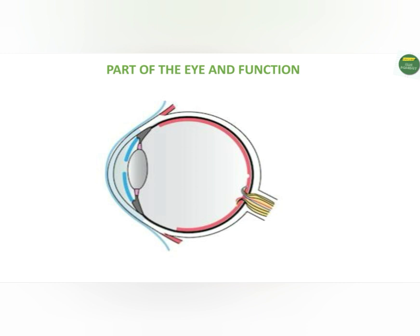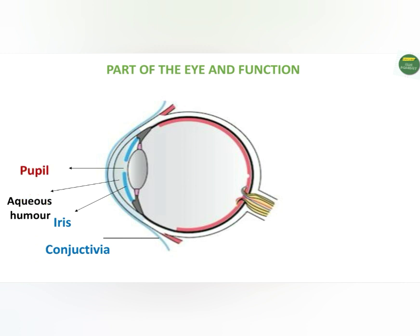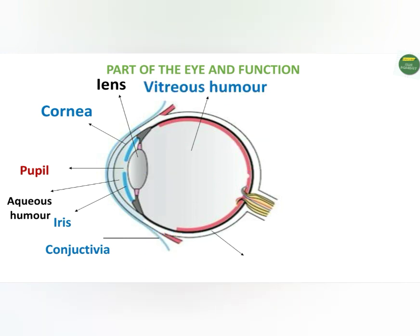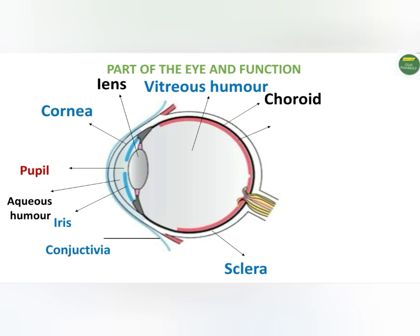Let's start by familiarizing ourselves with the basic parts of the eye. These include the conjunctiva, the iris, the aqueous humor, the pupil, the cornea, the lens, the vitreous humor, the sclera, the choroid, the retina, the fovea, and the optic nerve.